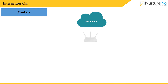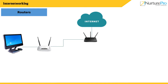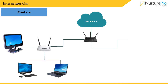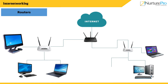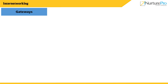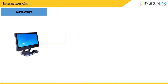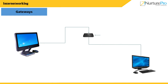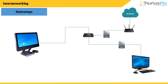Routers operate at the network layer and connect networks of different protocols, carrying out protocol translation. Gateways operate at the transport layer, interacting between two transport connections and carrying out conversion.